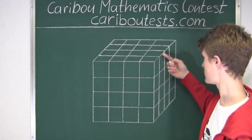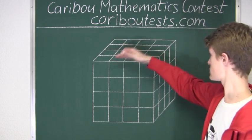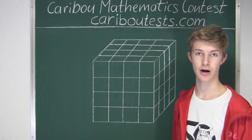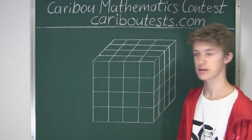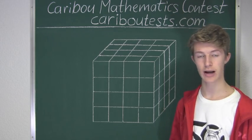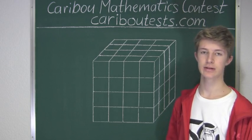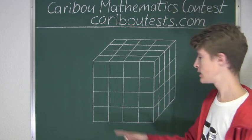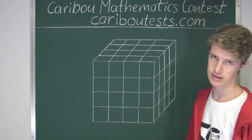So that means that all the cubes that you see right now are the exact ones that are covered in wax. If we wanted to find out the number of small cubes that do not have any wax on them, we would take the total of small cubes, which we know is 64. 4 times 4 times 4 is 64.